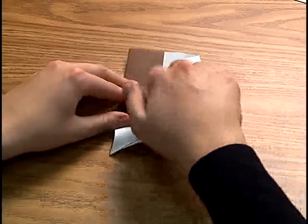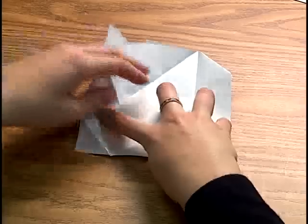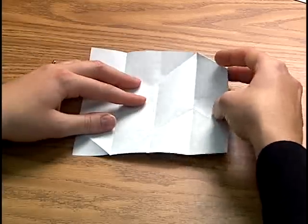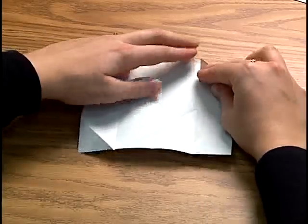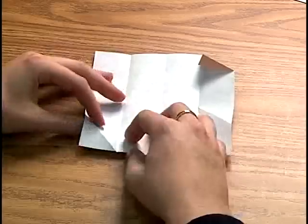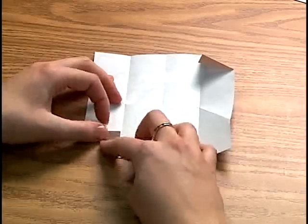Unfold your paper completely and fold in those two little triangles that you see at the top of the paper. You shouldn't be making any new creases. The creases are already there. You're just folding them the opposite direction.